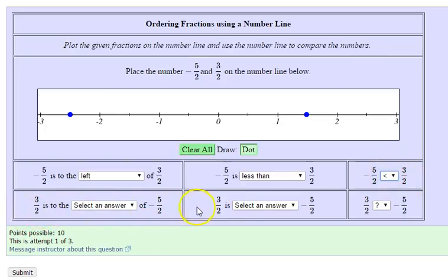Now we're going to be asked the same questions but in reverse order. So 3 halves is to the right of negative 5 halves. 3 halves is here, there's negative 5 halves.